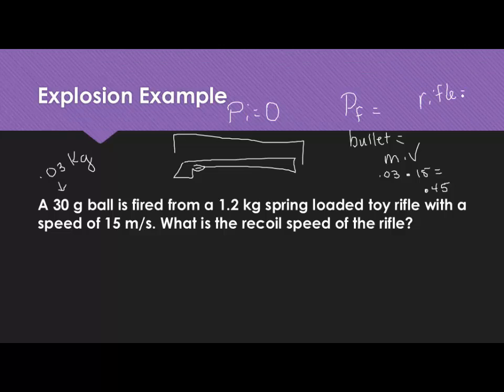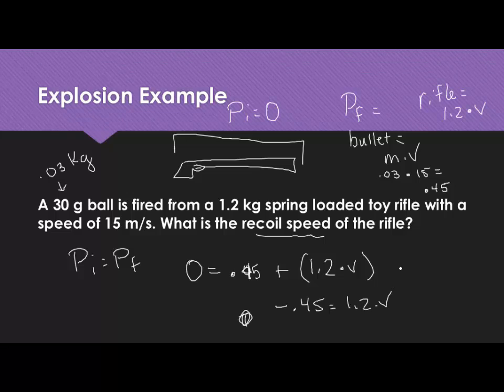The rifle, we know, has a mass of 1.2, but we don't know what its velocity is. That's what we're trying to figure out. So, the initial momentum equals final. Our initial momentum in this case, since both things are at rest, is 0. After the interaction, in this case it's an explosion, our bullet leaves with 0.45 momentum. And then we have the momentum of the rifle, which we don't know what its velocity is. Subtract 0.45 from both sides. Negative 0.45 divided by 1.2, and we get a velocity for our rifle of negative 0.38 meters per second. This is negative because this negativity is telling us that this is a recoil velocity going in the opposite direction as our bullet.